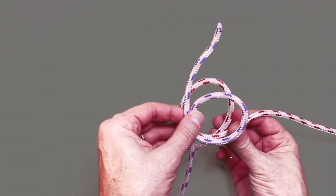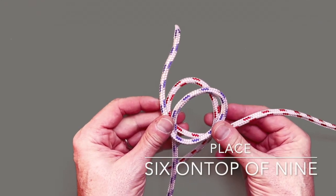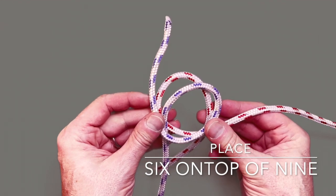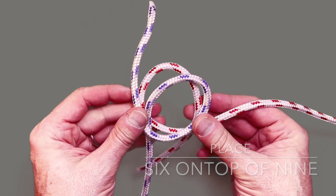Step three is to take the loop of your six and sit it on top of the loop of the nine.